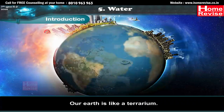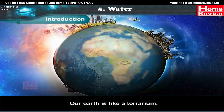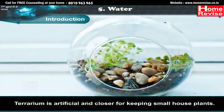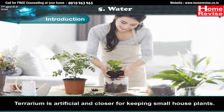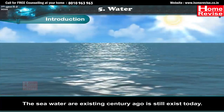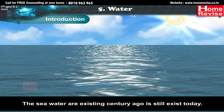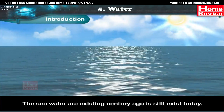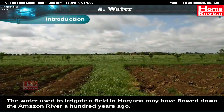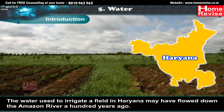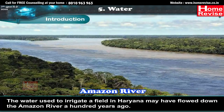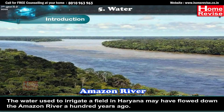Our earth is like a terrarium — an artificial enclosure for keeping small house plants. The same water that existed centuries ago still exists today. The water used to irrigate a field in Haryana may have flowed down the Amazon River a hundred years ago.